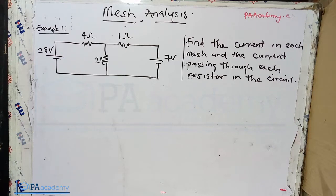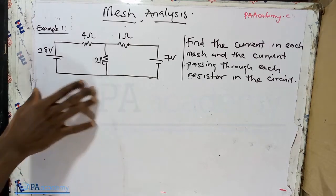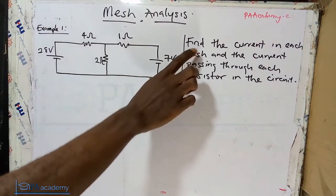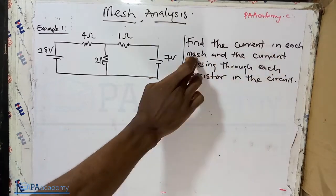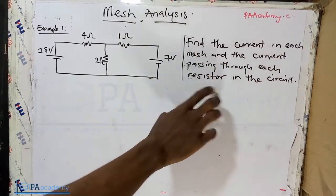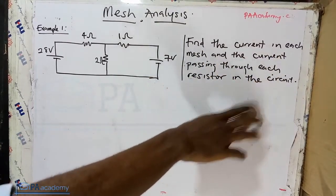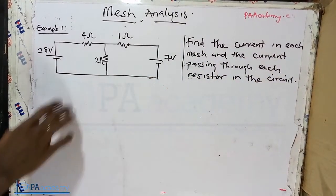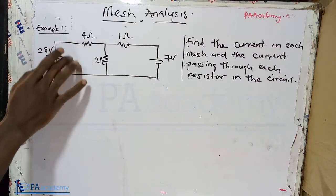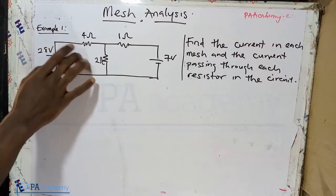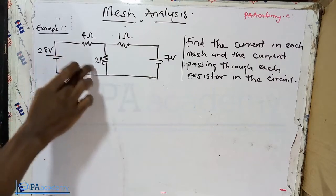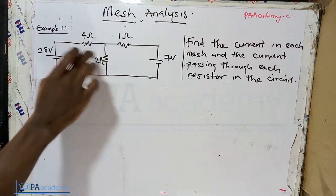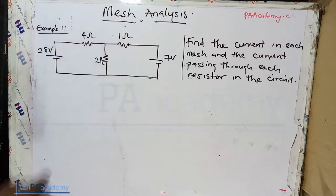We already have this circuit and we are asked to find the current in each mesh and the current passing through each resistor in the circuit. That means in each particular mesh you have to find the current that is flowing there, and also the current through each resistor.